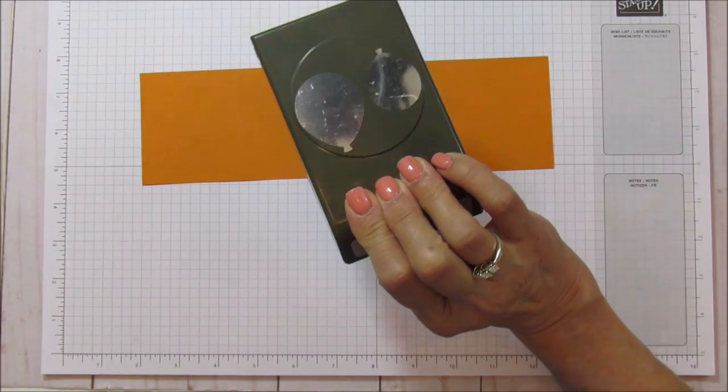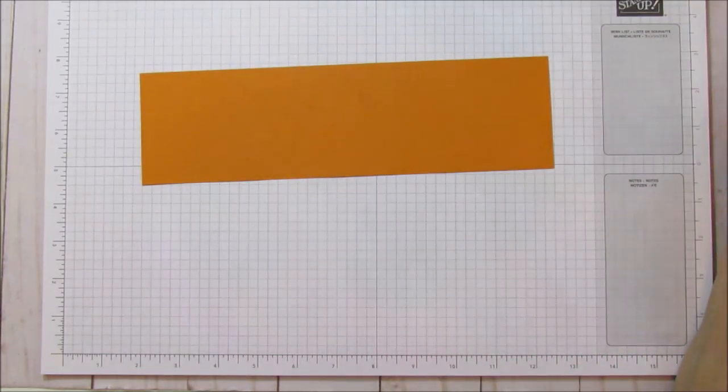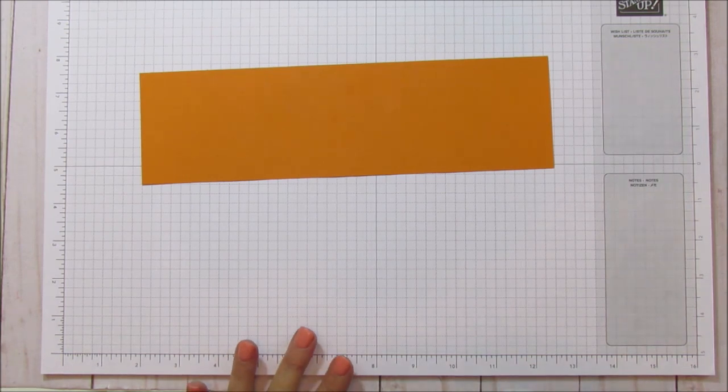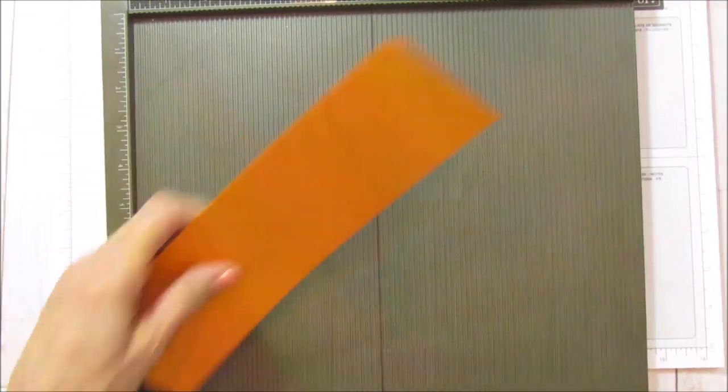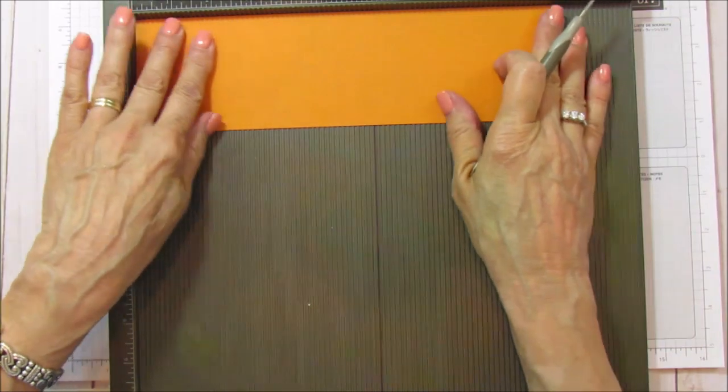Then you'll just need some scrap colors for your balloons. I am using this balloon punch that we have here. All right, so let's get started scoring this. I'll grab the simply scored.